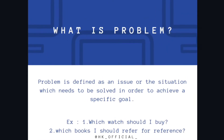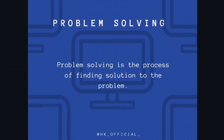What is a problem? A problem is defined as an issue or situation which needs to be solved in order to achieve a specific goal. This definition of problem is very important — mark it. For example, which watch should I buy, or which books should I refer to for reference, etc. While solving a problem, you have to make a right decision. If the decision is not made correctly, then there is a wastage of time and resources utilized for solving the problem.